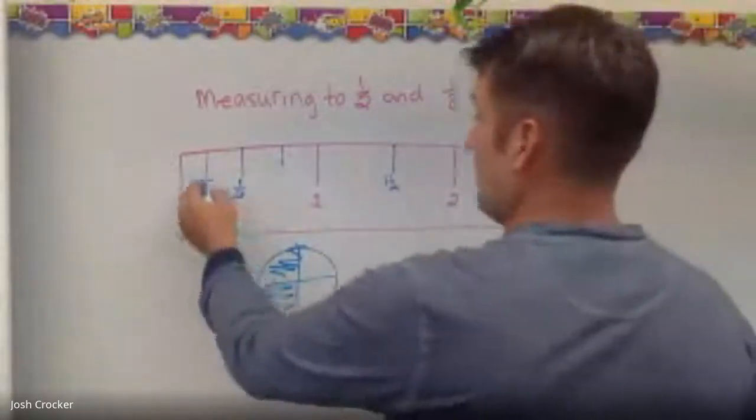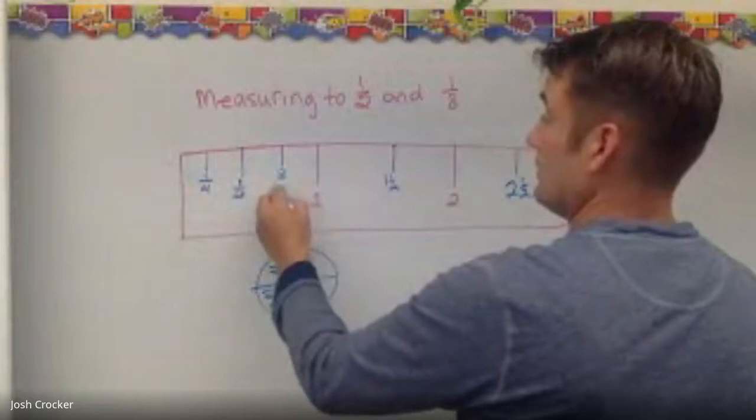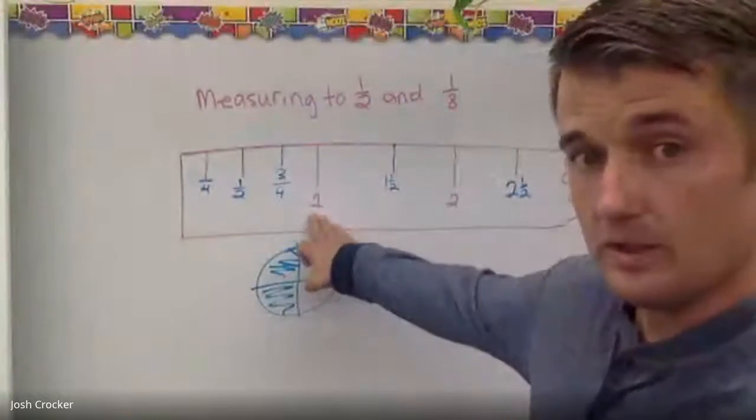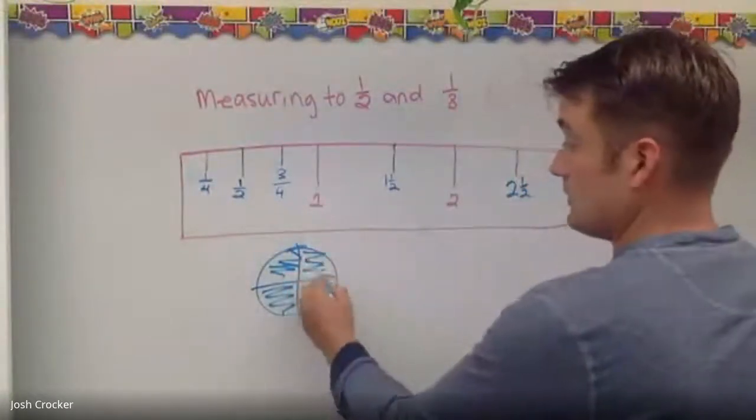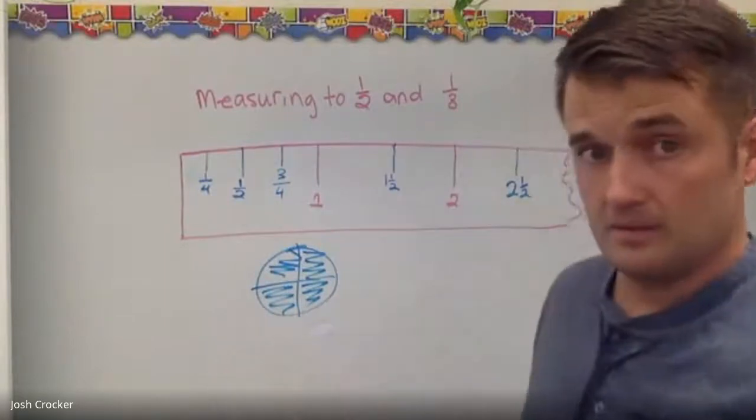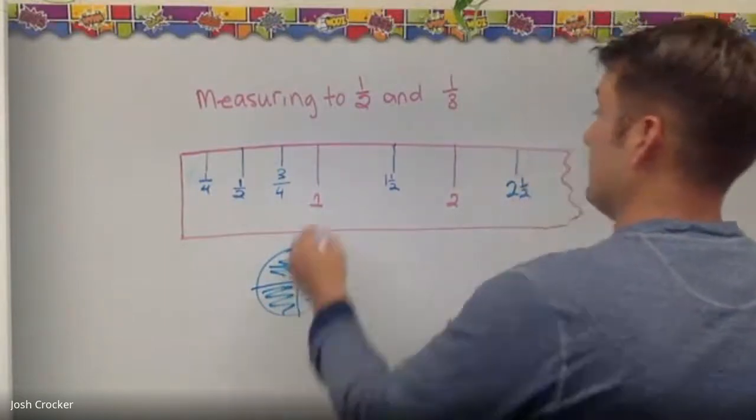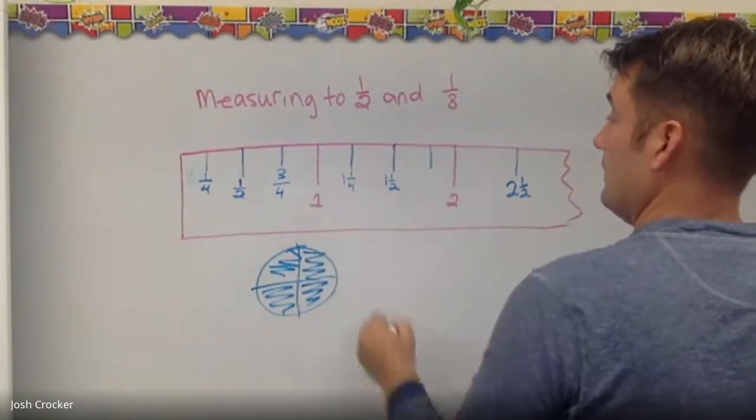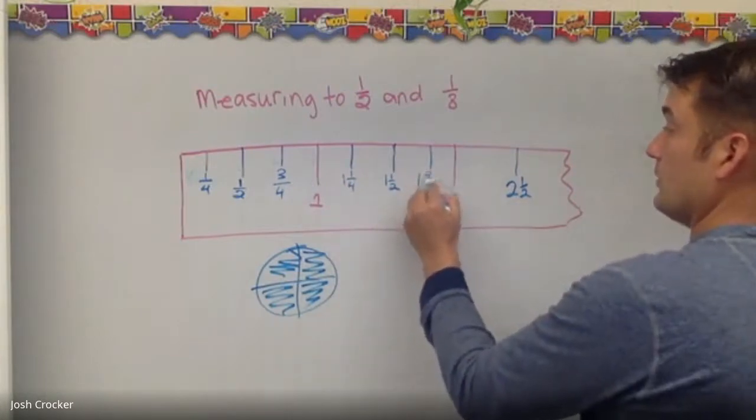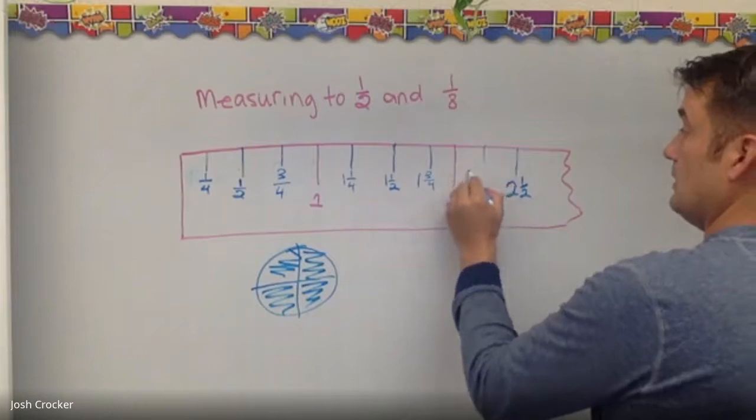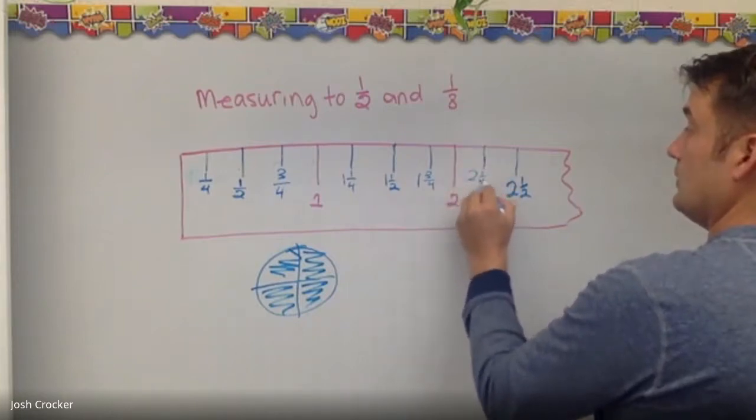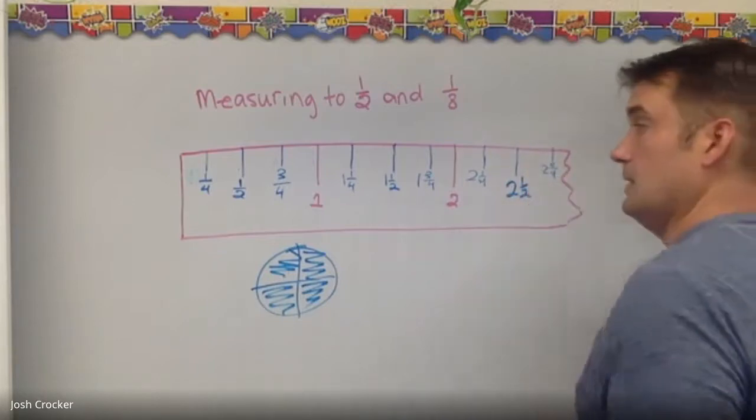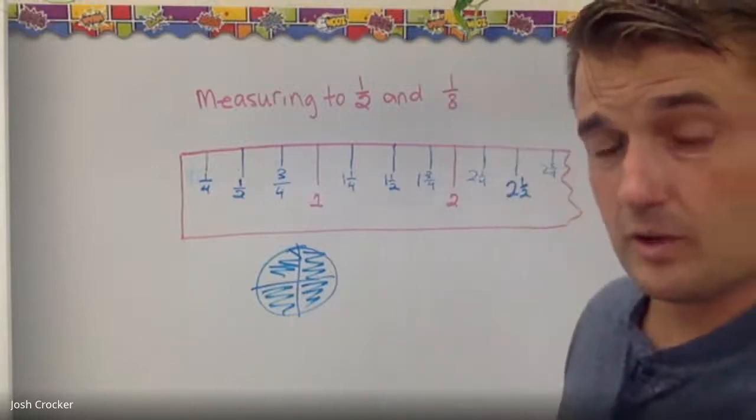So then the next line—one fourth, two fourths, three fourths. Okay, and then it would go to just a whole inch. Three fourths, right, three fourths, four fourths is the whole thing. Okay, so and it keeps going that way—so one and a fourth, one and two fourths, one and three fourths, two, two and a fourth, two and two fourths. Okay, so those are our quarter inch lines.